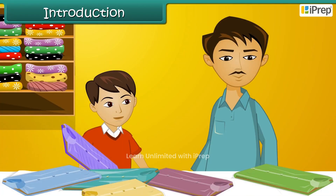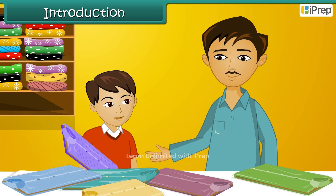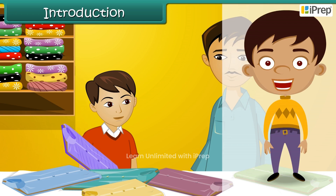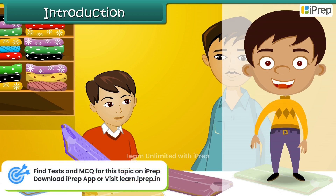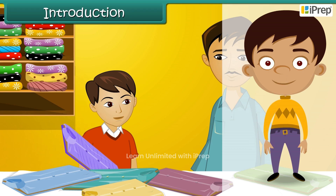Arjun then picks up a synthetic shirt which feels light and is wrinkle-free. His father rejects it too because it does not absorb moisture effectively. Finally, after two long hours, they come across shirts made of blended fabric that have all the qualities they are looking for.